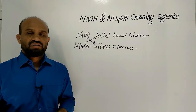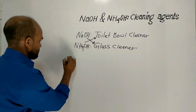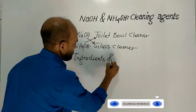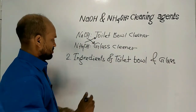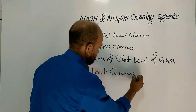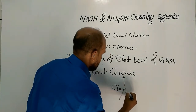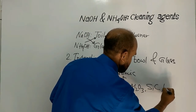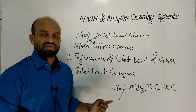The second point is the ingredients of the toilet bowl and glass. First, the toilet bowl, which is a kind of ceramic. The major components of ceramic are clay, alumina, silicon carbide, and tungsten carbide.